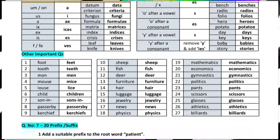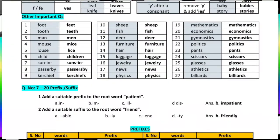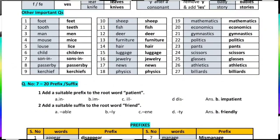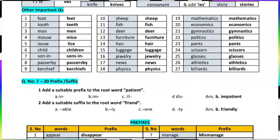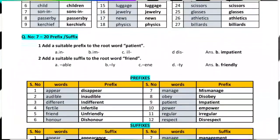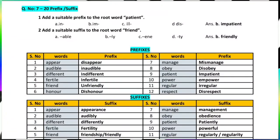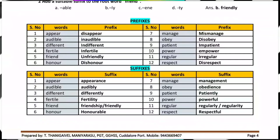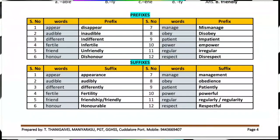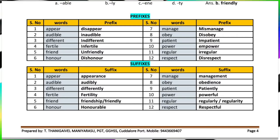Prefix and suffix — prefix means a word added at the front, and suffix means a word added at the last. For example, 'patient' becomes 'impatient' by adding a prefix. 'Friend' becomes 'friendly' by adding a suffix. Next are clipped words, blending words, and phrasal verbs.